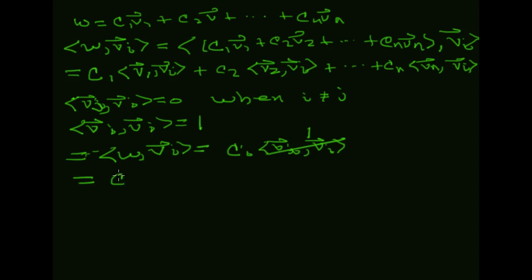So we get Ci equals ⟨W, Vi⟩, which is what I was trying to prove. Boom, that's it. That's kind of nifty and useful. But the problem is that orthonormal bases don't just fall from the sky — they have to be kind of earned a bit.